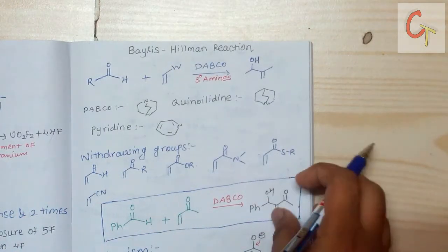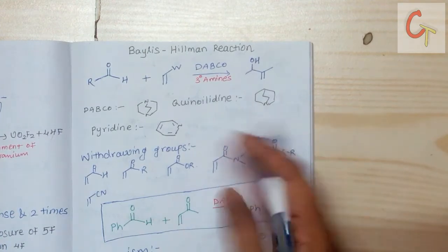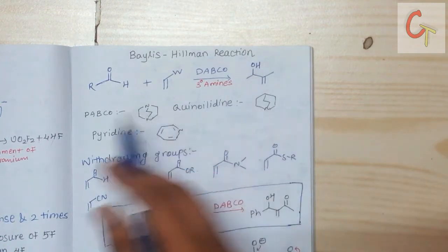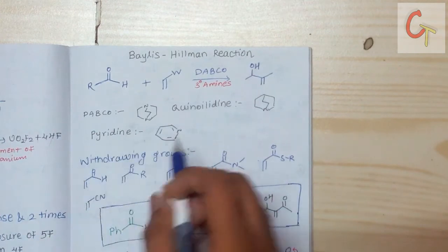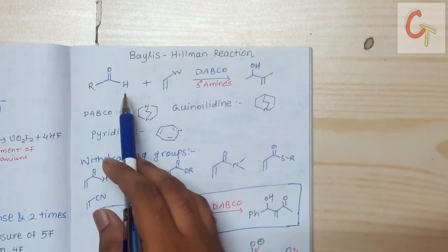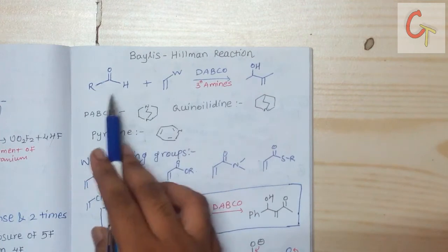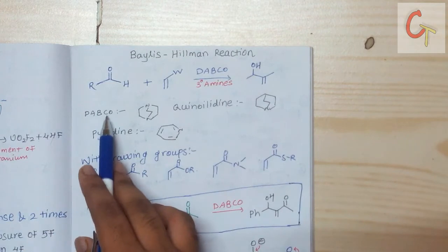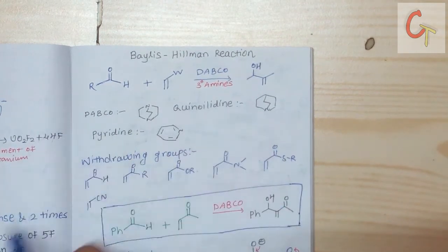Hello friends and welcome to the channel. Today I'm going to discuss one name reaction — the Baylis-Hillman reaction. Generally, in the Baylis-Hillman reaction, it is a C-C coupling reaction in the presence of a tertiary amine. There is C-C bond formation between an activated olefin and an aldehyde carbonyl carbon. There are three tertiary amines used: DABCO, quinuclidine, and pyridine.